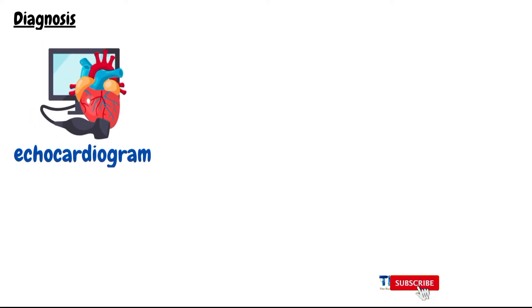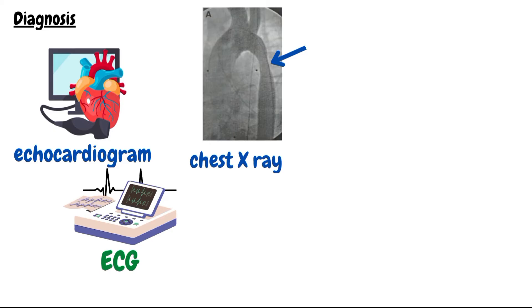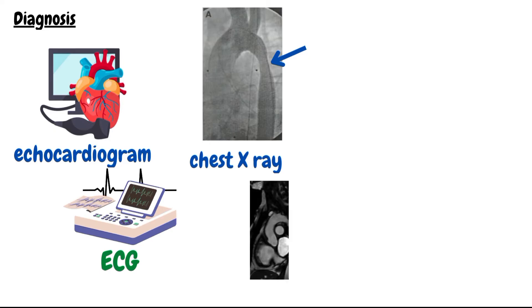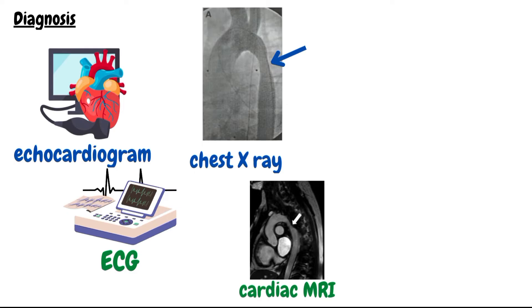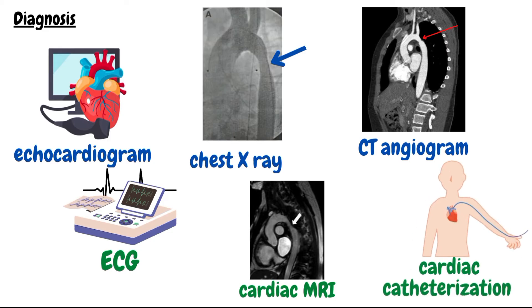Coarctation of aorta can be diagnosed by several investigations. The first is the echocardiogram, which can often show the location and severity of the coarctation. ECG may reveal thickening of the walls of the ventricles or ventricular hypertrophy. Chest x-ray may show a narrowing in the aorta at the site of coarctation. Cardiac MRI can show the location, severity, damage to other blood vessels, and other heart defects. CT angiogram and cardiac catheterization can also show the location and severity of the defect.